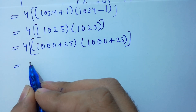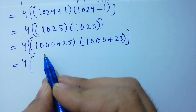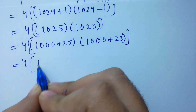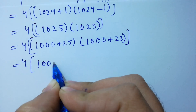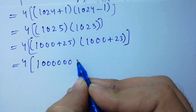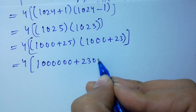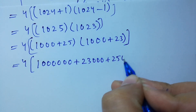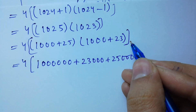We multiply both: 1000 times 1000 gives 1,000,000 — that's 6 zeros. Then we add the cross terms: 23,000 and 25,000, plus 25 times 23.